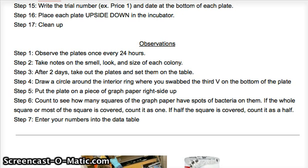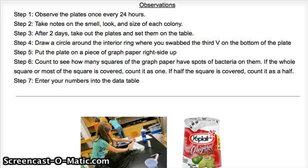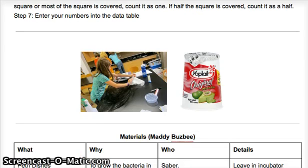Then clean up your space. Observe the plates every 24 hours and take notes on how they smell, look, and the size of each colony. After two days, take out the plates, set them on the table, and draw a circle around the interior ring and swab on the third V at the bottom of the plate. Put the plate on graph paper and use the small squares to count the size of the colony instead of square centimeters. Count squares that have bacteria on most of the square as one; if half the square is covered, count it as half. Enter your numbers into the data table.